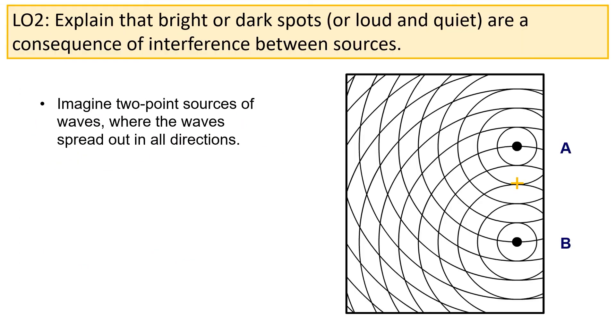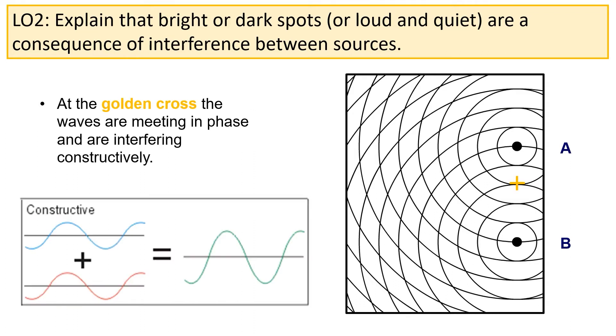Imagine for a second we have two point sources of waves A and B, where the waves spread out in all directions. At certain points, for example at the golden cross, the waves are going to be meeting in phase, and therefore they're going to be interfering constructively at those points.